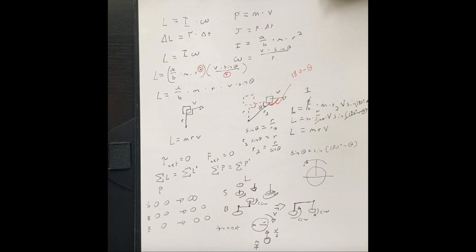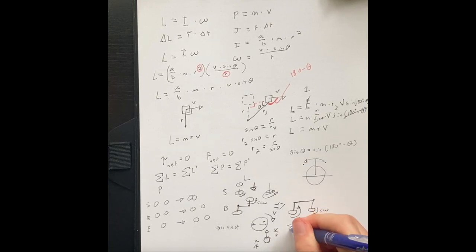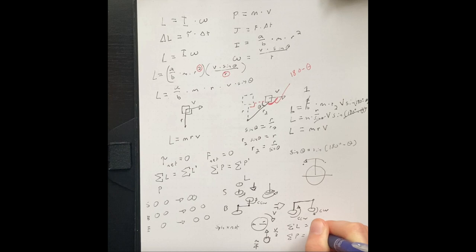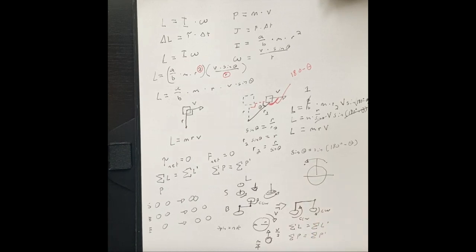And so what you need to know when you have cases of linear and spinning, or angular, is that you have to maintain both the angular momentum and the linear momentum.